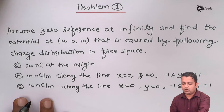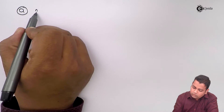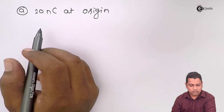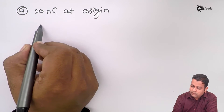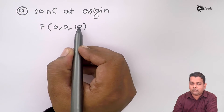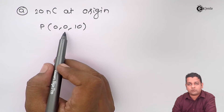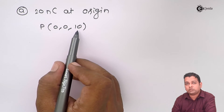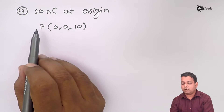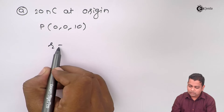For part A, the given data is 20 nanocoulombs at the origin. The field point P is at coordinates (0, 0, 10) — zero units on the x-axis, zero units on the y-axis, and 10 units on the z-axis. So the distance of field point P from the source at the origin is R = 10. Using the simple formula V = Q / (4πε₀R), we substitute the values: V = 20×10⁻⁹ divided by 4π × (10⁻⁹/36π) × 10, which simplifies to 20×9/10.